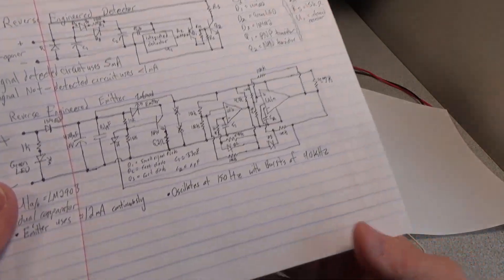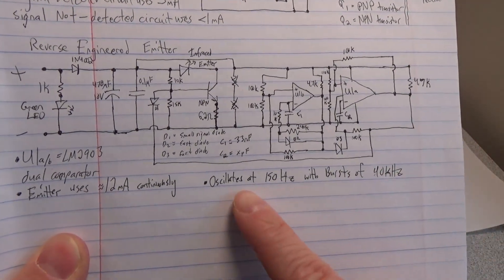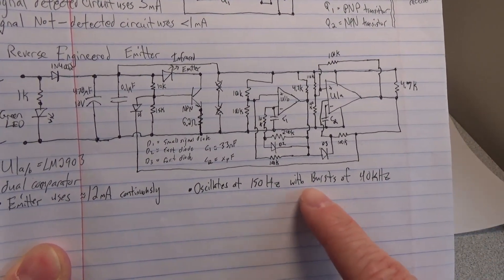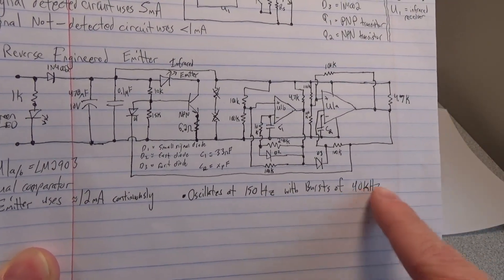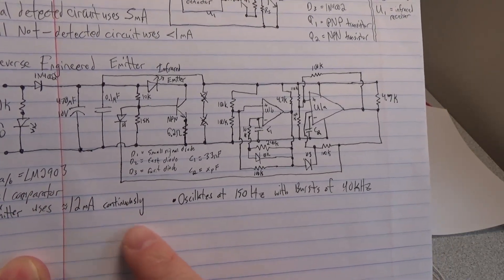The next part is the emitter, which is significantly more complicated. You can see there's quite a lot more going on. It oscillates at 150 hertz with bursts of 40 kilohertz, which we saw on the scope. We have the dual comparator, and it uses about 12 milliamps continuously.